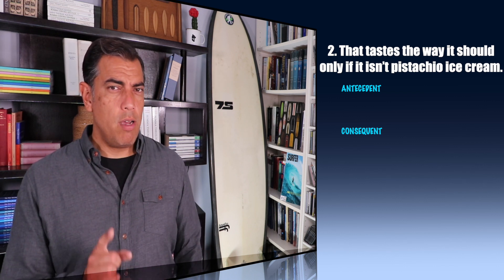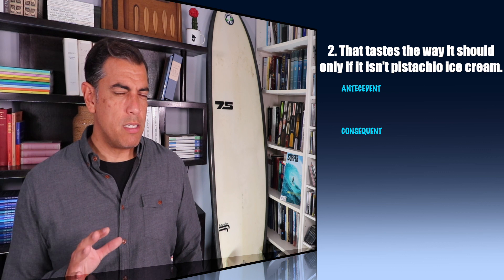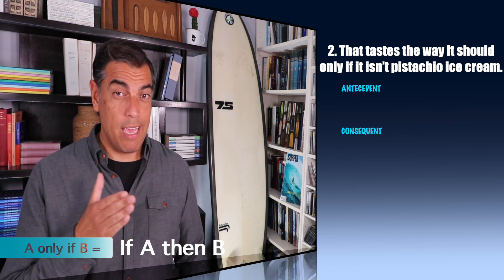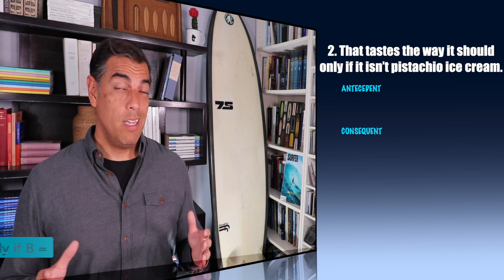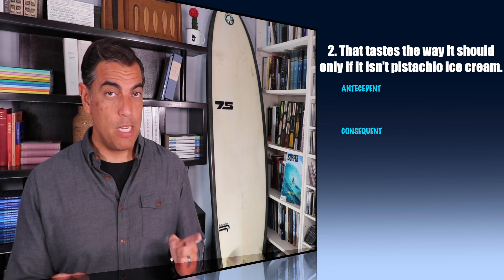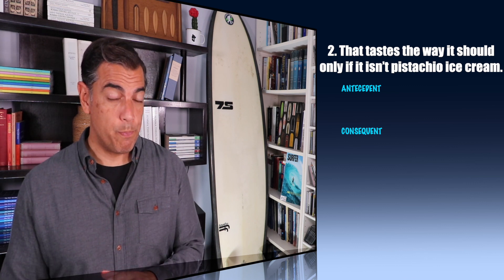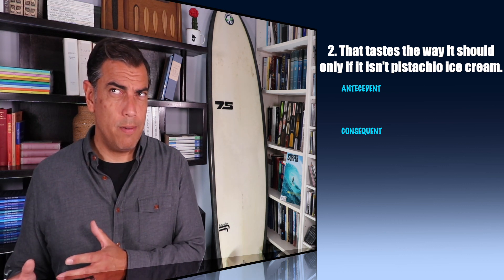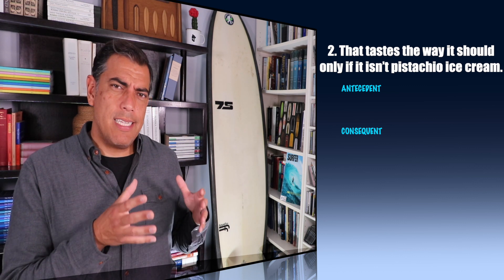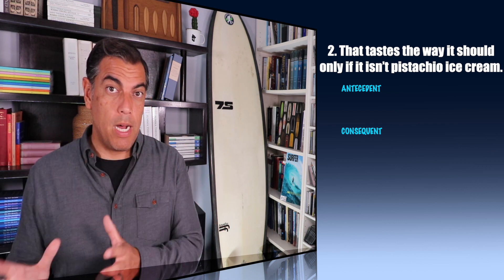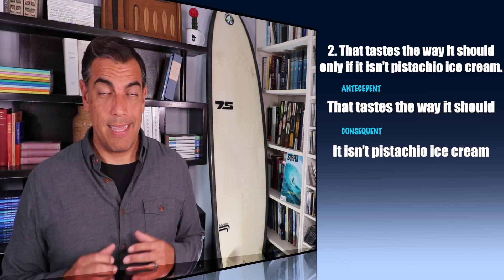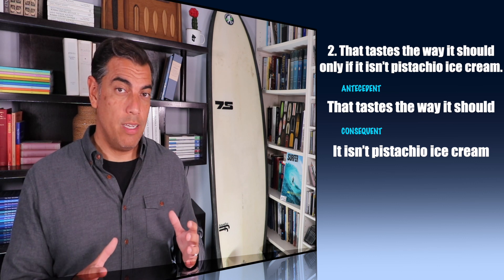In the last video, I talked about this 'only if.' I said it makes things a little bit different. You say A only if B, what you really mean is if A, then B. But let's look at this one and see what makes sense. Does this mean that if that tastes the way it should, then it must be the case that that is not pistachio ice cream? Or does it mean that if that isn't pistachio ice cream, then it tastes the way it should? That can't be right — it can't be the case that just because something isn't pistachio ice cream, it must taste the way it should. It must be the other way. The antecedent is 'that tastes the way it should.' The consequent is 'it isn't pistachio ice cream.'